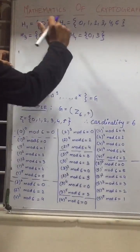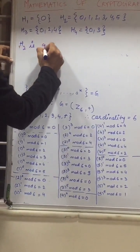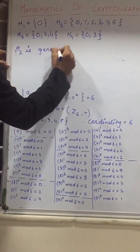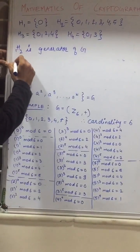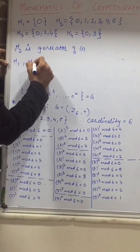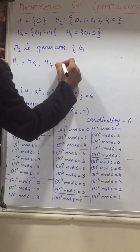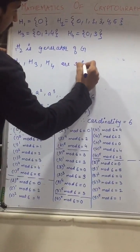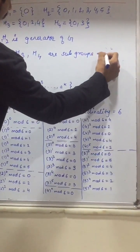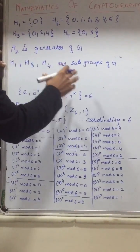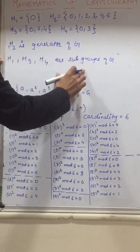This is called a generator. So H2 is the generator of G. And H1, H3, and H4 are subgroups of G. In this section you have learnt about how to get the generator and subgroups.